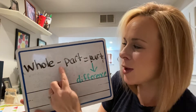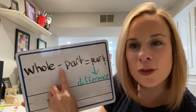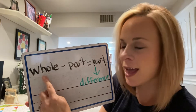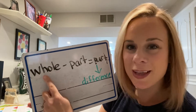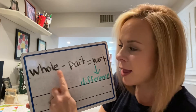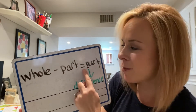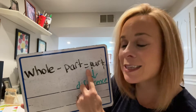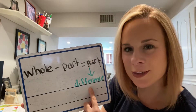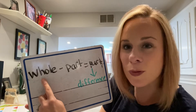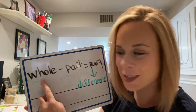Now let's review subtraction. In a subtraction sentence you use the minus and the equal signs. What's different about subtraction is that you start with the whole — that biggest number is the whole. You take away a part from that whole to get another part. The answer after the equal sign in a subtraction sentence is known as the difference. The biggest number in a subtraction sentence is the whole, and that will always go first. Then you'll have your parts.